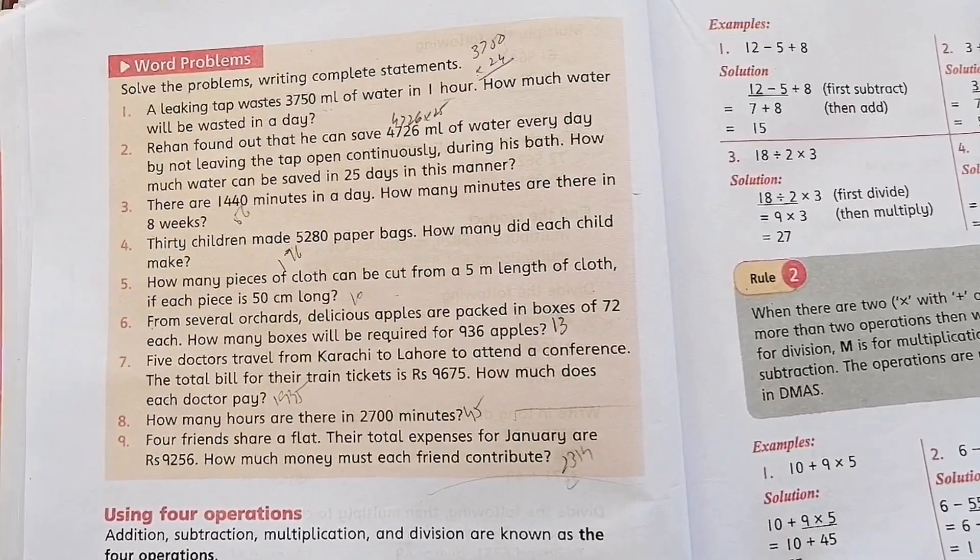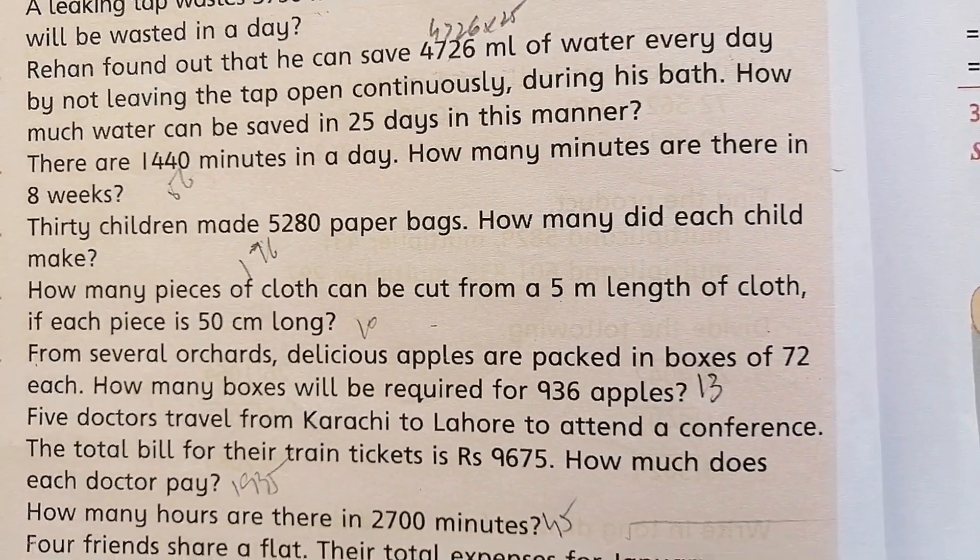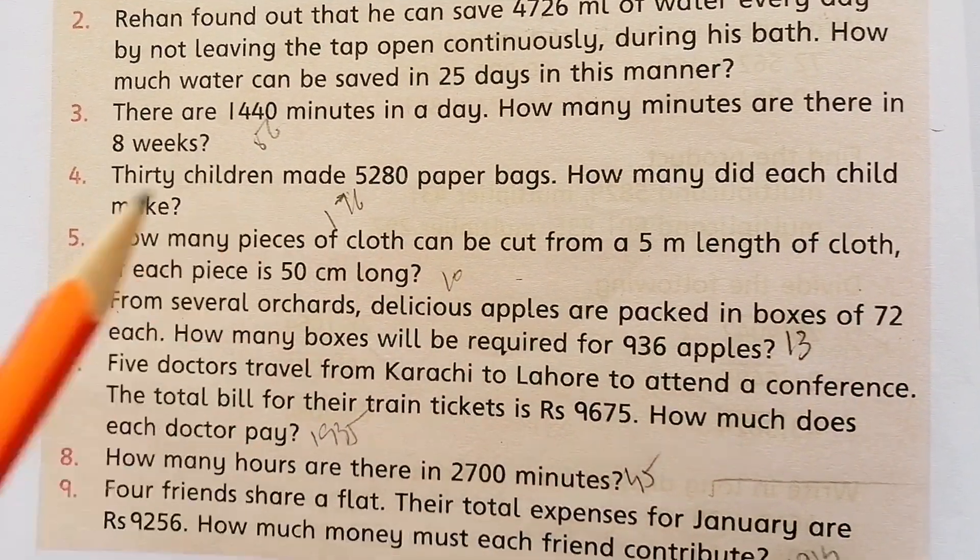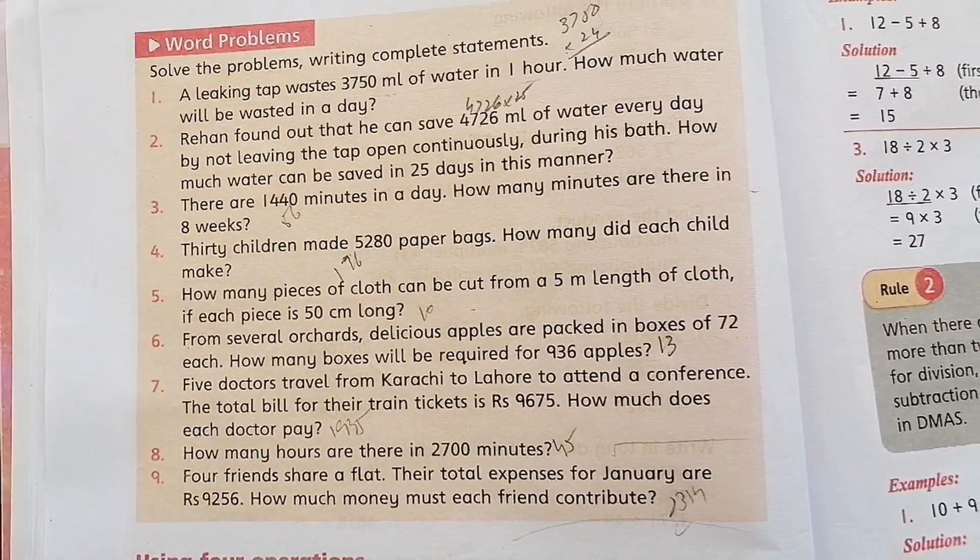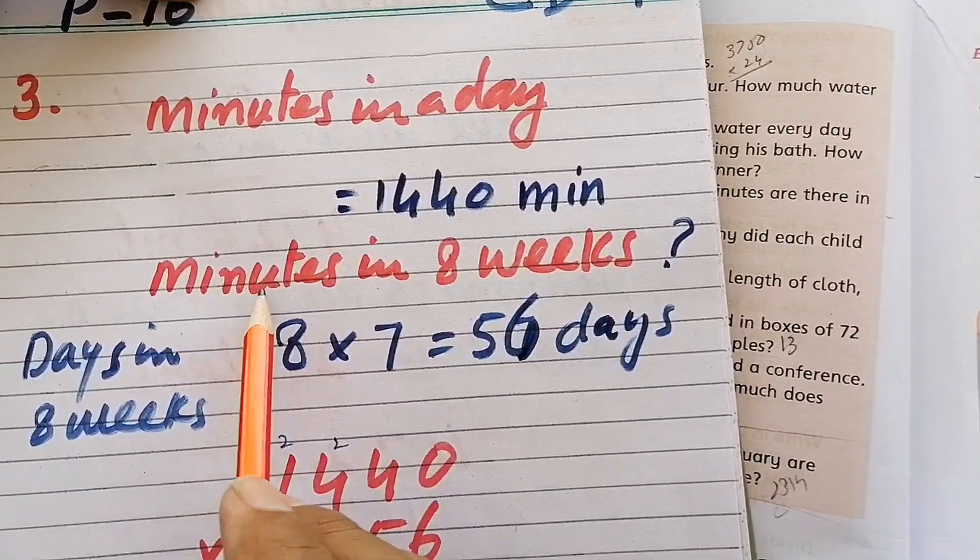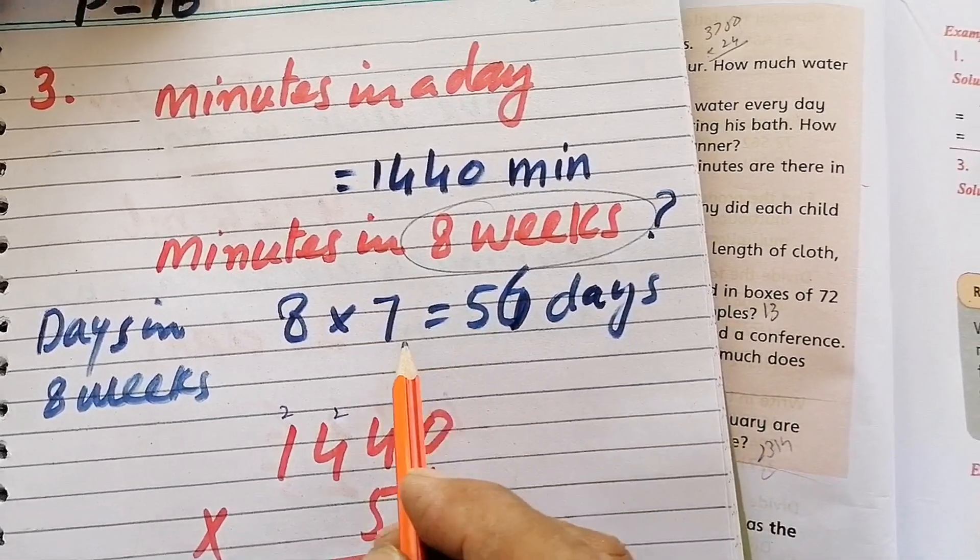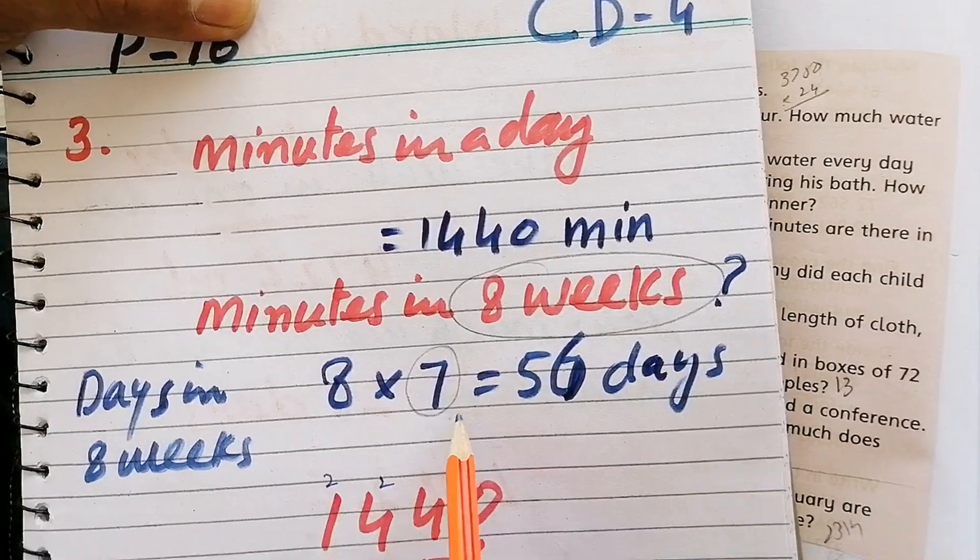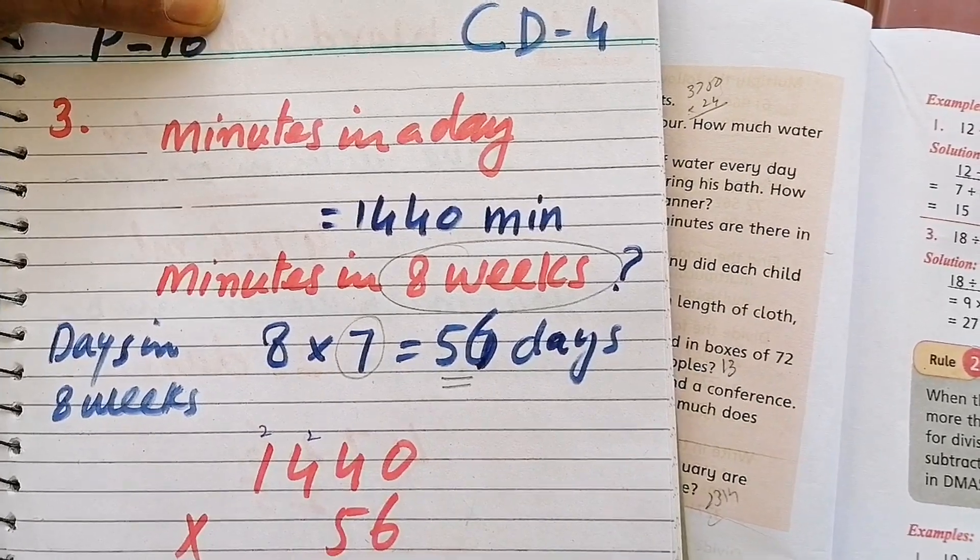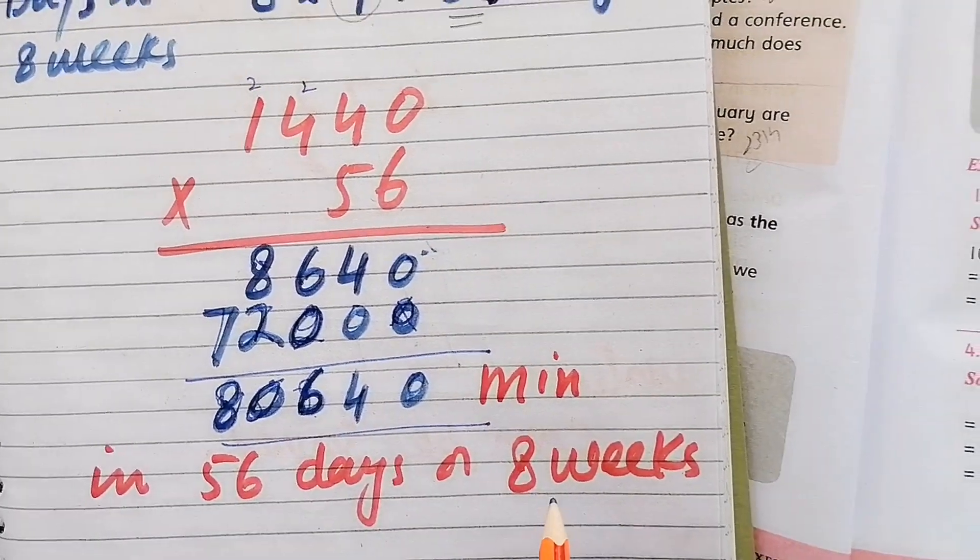Question number three: There are 1,440 minutes in a day. How many minutes are there in 8 weeks? First we find how many days are in 8 weeks. Seven days per week, so 8 times 7 equals 56 days. Then multiply 1,440 by 56 to get the answer.